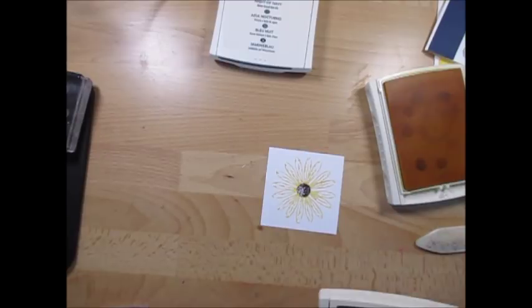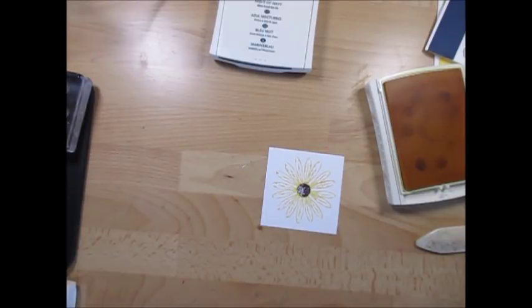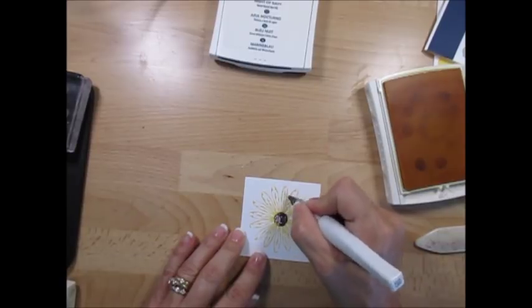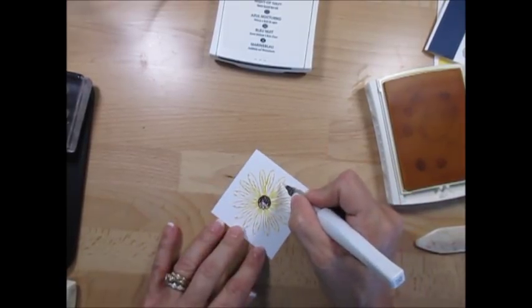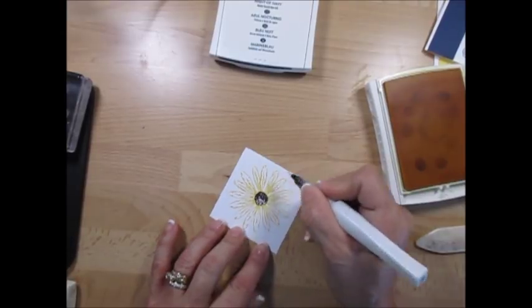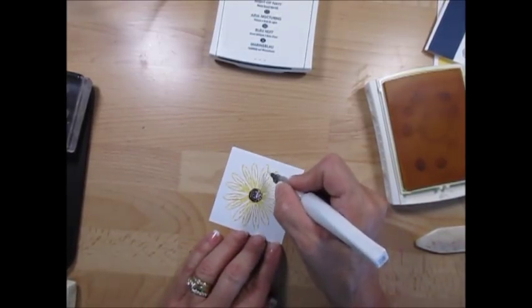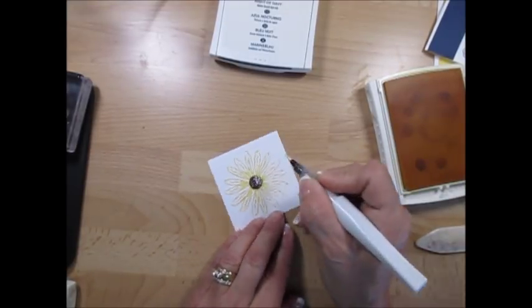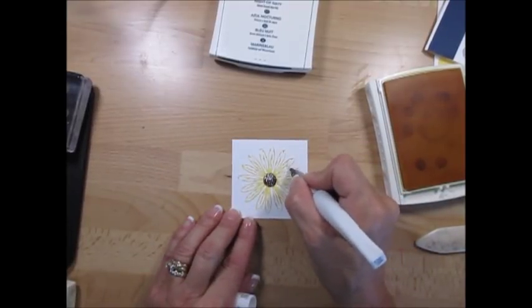If you want to crank it up a notch, you can use Wink of Stella. Let me show you. So I had done just every other petals, so you can just use your Wink of Stella. The Wink of Stella blends the color a bit so it makes it look a little bit stronger. So I just go and do every other one.